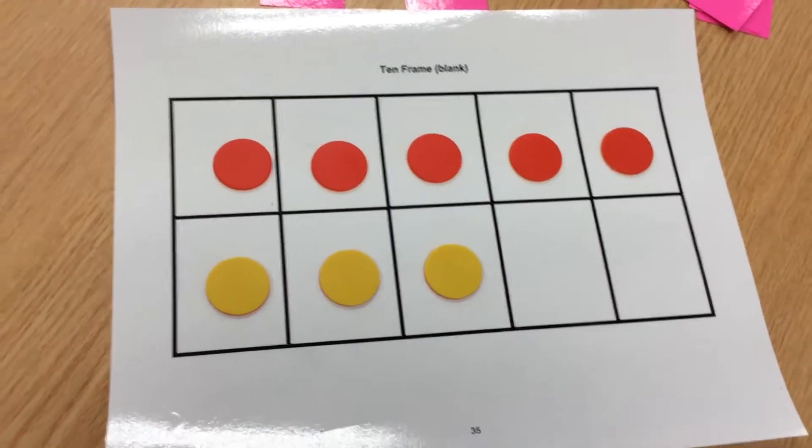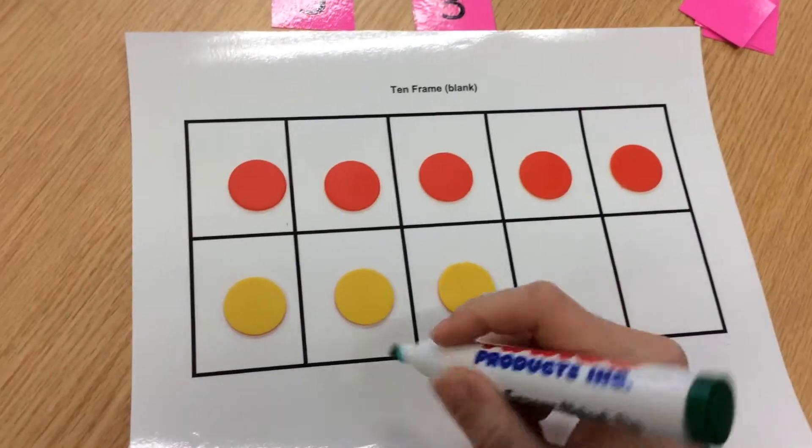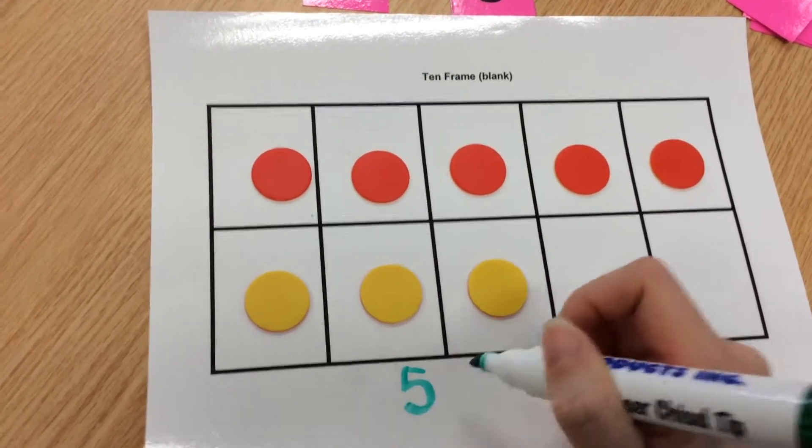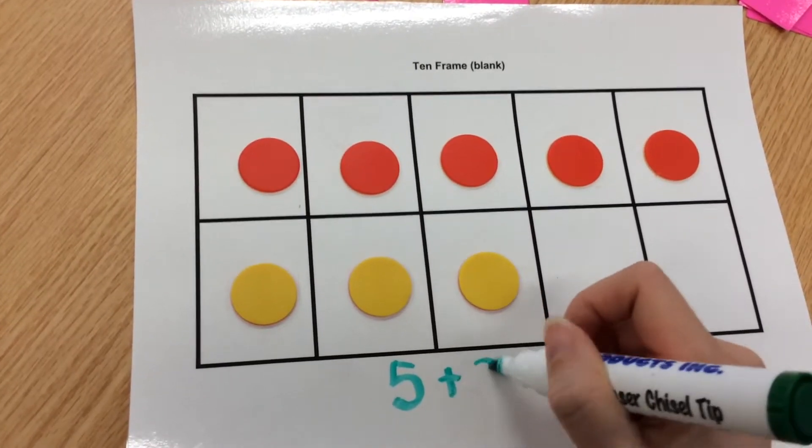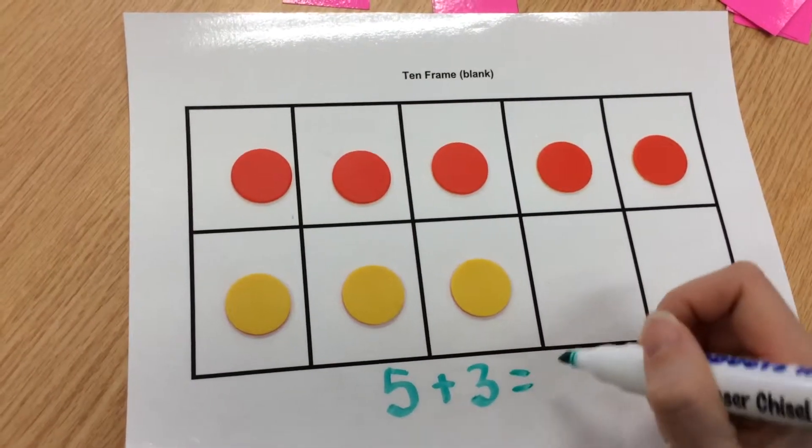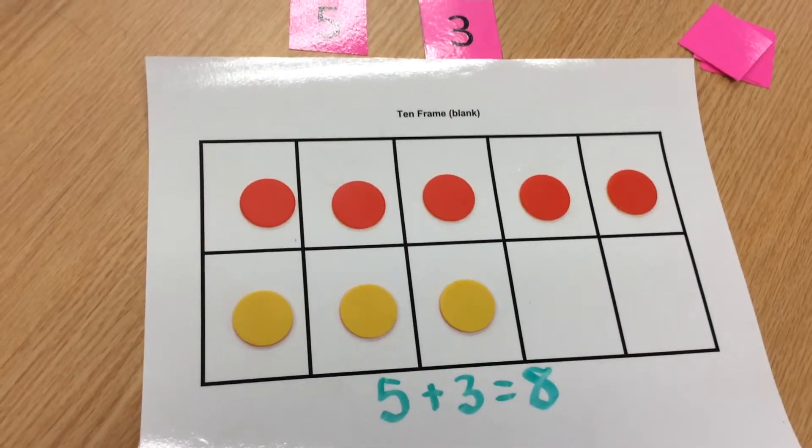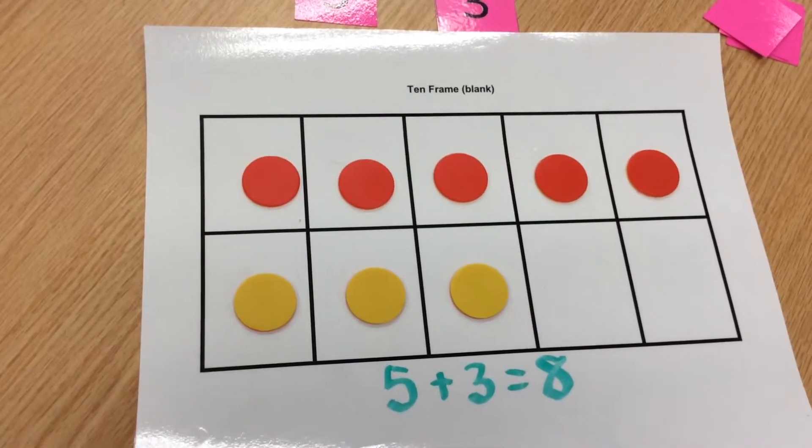If you have already watched the number sentence video, you can write the equation down below. Five plus three equals eight. And then you will take a picture on Seesaw.